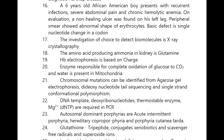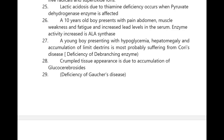Autosomal dominant porphyrias are acute intermittent porphyria, hereditary coproporphyria, and porphyria cutanea tarda. Glutathione is a tripeptide that conjugates xenobiotics, scavenges free radicals, and scavenges superoxide ions.